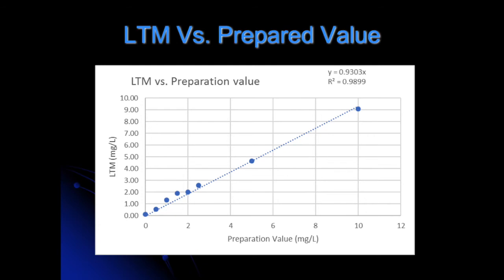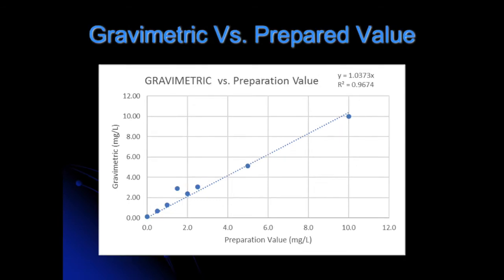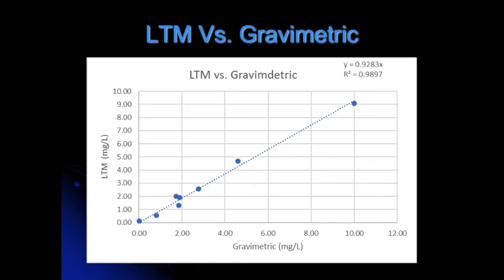As you can see from the graph, it was very accurate in determining the amount of particulate compared to the prepared value. When you compare the data from the LTM method to the gravimetric method, it determines an R-squared value of 0.9674, which is significantly lower than the R-squared value for the LTM method, and some data points are significantly further off the prepared value line. If we compare the gravimetric method, which was the industry-used method at the time, to the LTM method, we see an R-squared of 0.9897, showing that the LTM method is basically giving you the exact same information as the gravimetric method, just slightly more accurately.